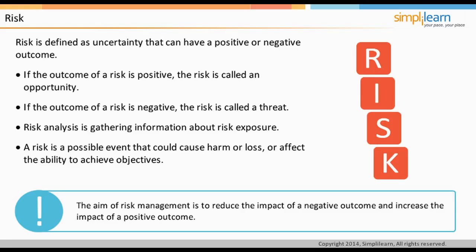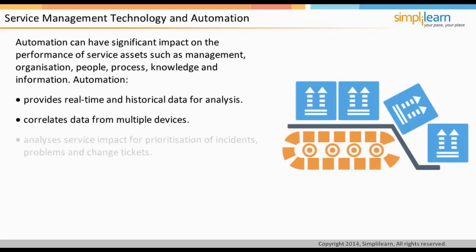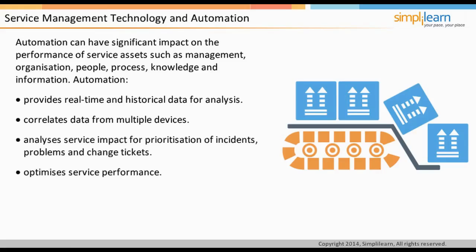Automation can have significant impact on the performance of service assets such as management, organization, people, process, knowledge, and information. Automation is considered to improve the utility and warranty of services. It provides real-time and historical data for analysis, correlates data from multiple devices, analyzes service impact for prioritization of incidents, problems, and change tickets, and optimizes service performance — for example, by adjusting capacity based on demand.